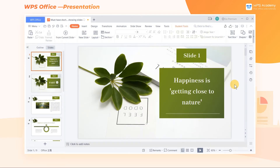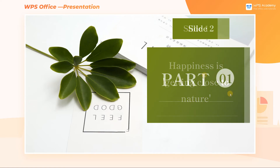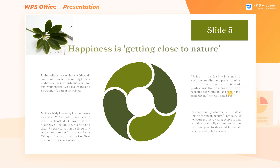To directly start from the current slide, use the shortcut Shift+F5. Moreover, we can jump to the desired slide using the shortcut Number+Enter when displaying. For example, if we are on the second slide, we can press 5+Enter to jump to slide 5.